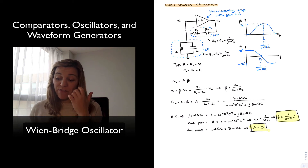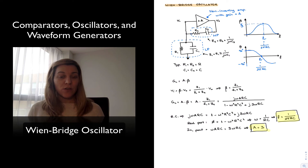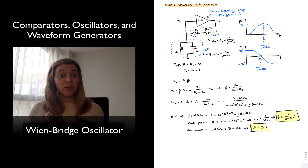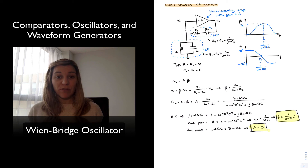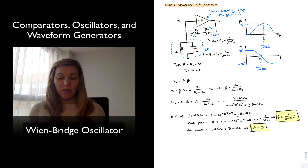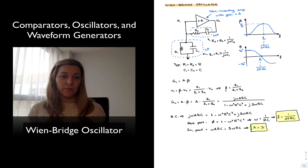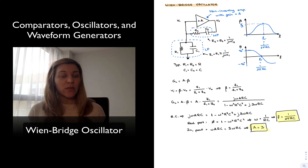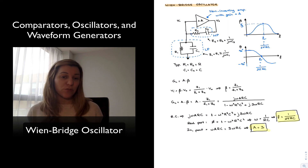If I design the circuit using a non-inverting amplifier configuration with a gain of 3, I should have a sustained oscillation at the resonant frequency determined by the values of R and C. However, if we just design the circuit with a gain exactly equal to 3, the oscillations will eventually die due to internal losses.